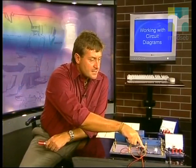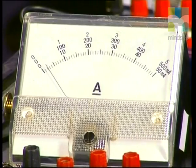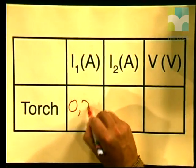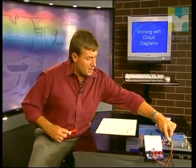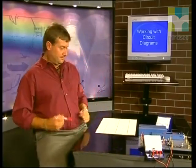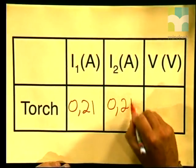Let me close the switch and let's see what the ammeter reads. My ammeter reading is approximately 0.21 amperes. Now let's write that reading down: I1, my first ammeter reading, is 0.21 amperes. I have now set up my circuit board to take my second ammeter reading. Closing the switch — the ammeter is reading 0.21 amperes. I2, my second ammeter reading, is 0.21 amperes.